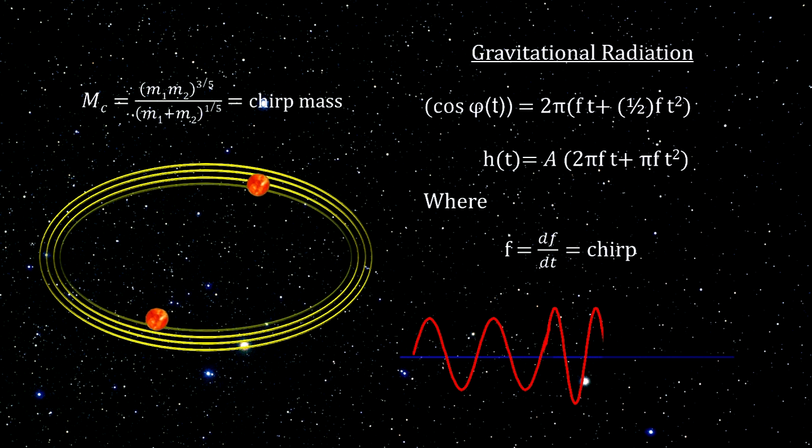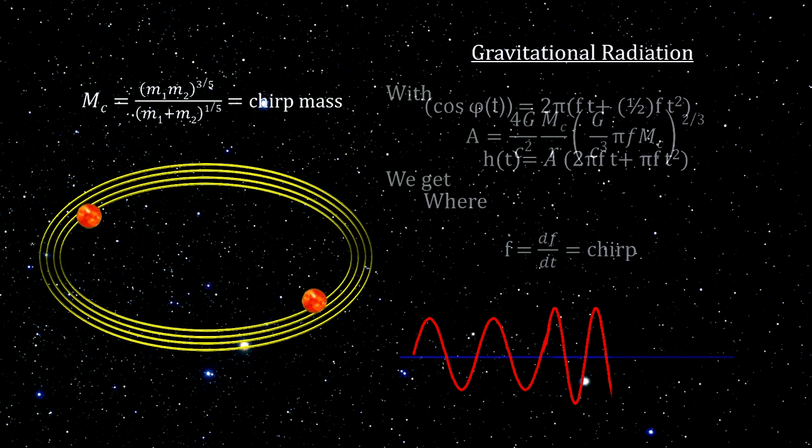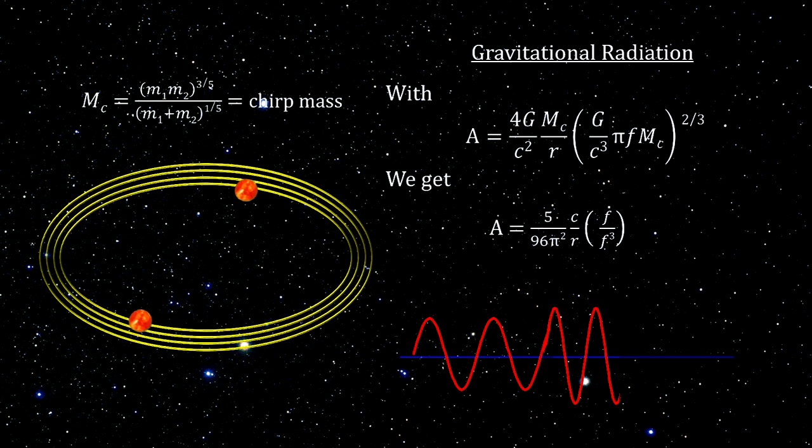It gives us the ability to express the amplitude of the gravitational wave in terms of the frequency and the rate the frequency is changing, instead of the masses and the distance between the masses.